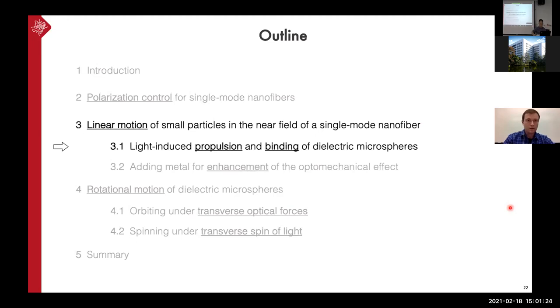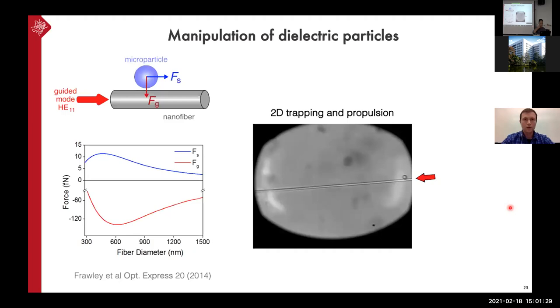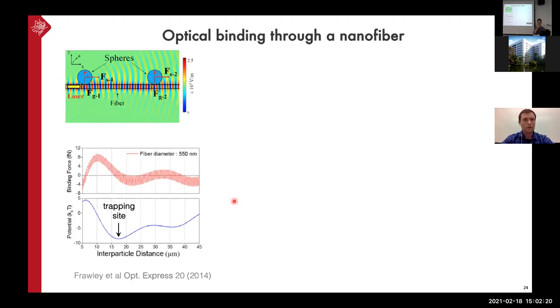All right, now I'm switching to the optomechanics itself. So I'm going to look at the propulsion of the microparticles near the nanofiber. So if we send some fundamental mode into the fiber and bring the dielectric microparticle, so the particle will be subject to the gradient force, which brings the particle to the fiber. And then there is a scattering force, which is pushing the particle along the waist in the direction of propagation. And this is the simulations in COMSOL. So we have this scattering force and gradient force. So we can find some optimum fiber diameter to explore this interaction. And you can see that we can get propulsion. So the particles are moving along the fiber and stay trapped in the transverse plane.